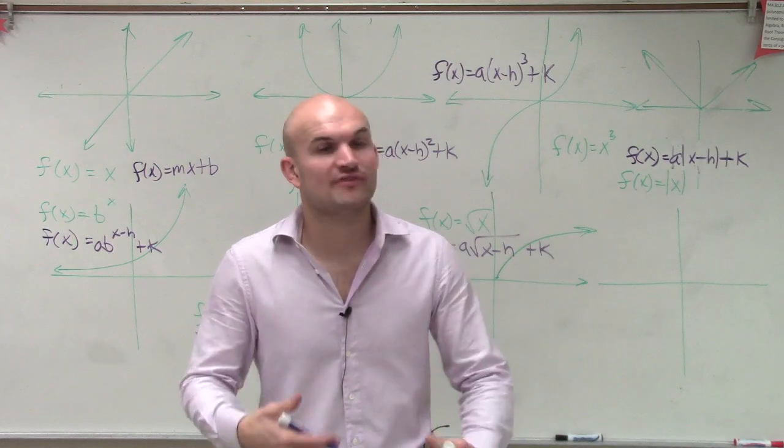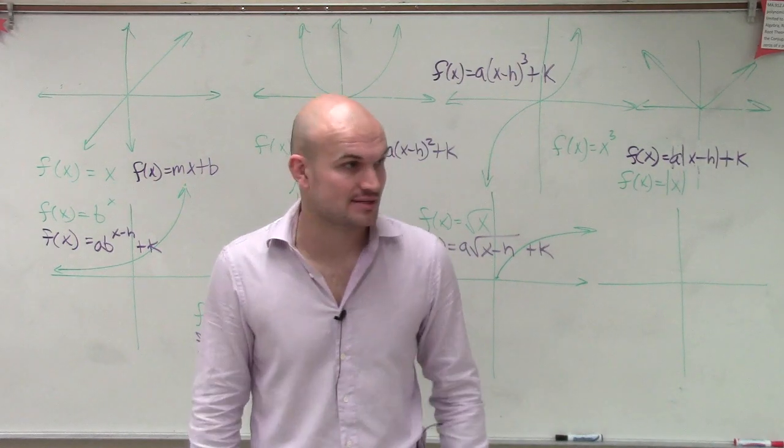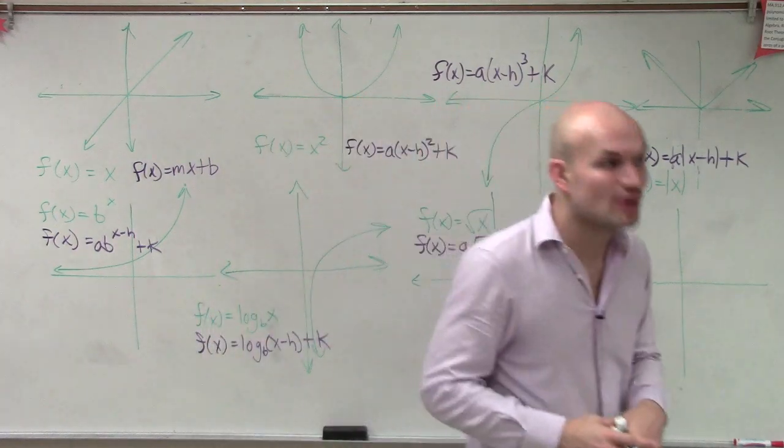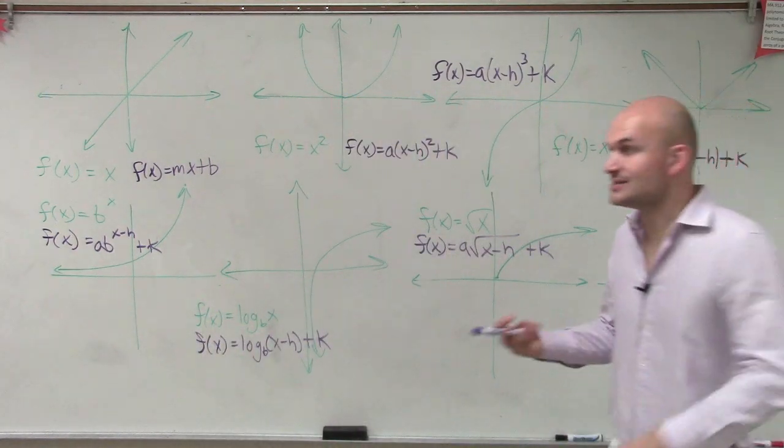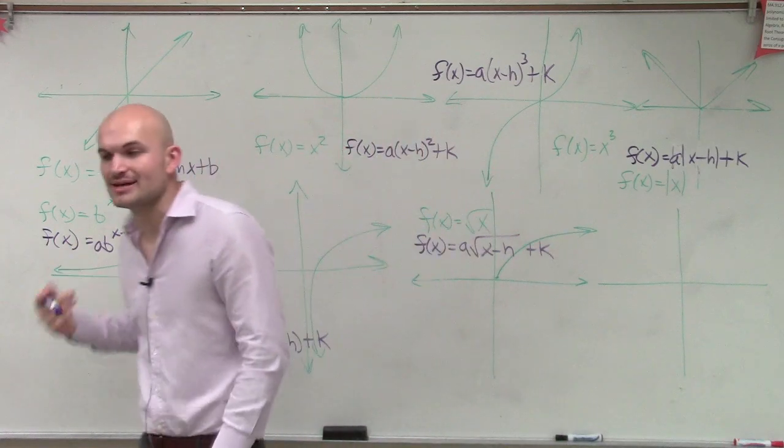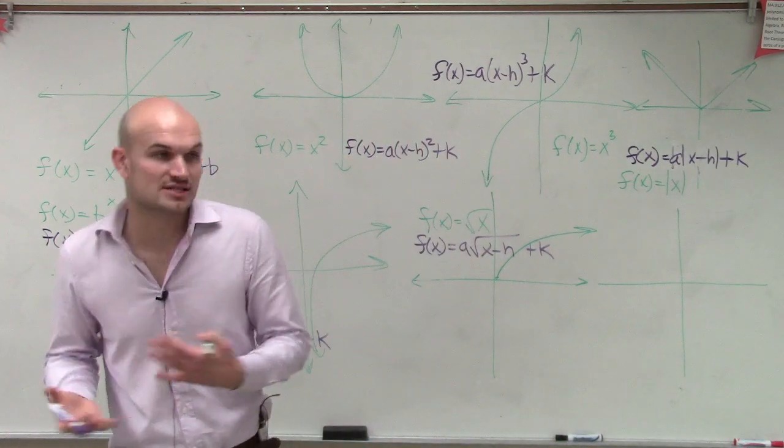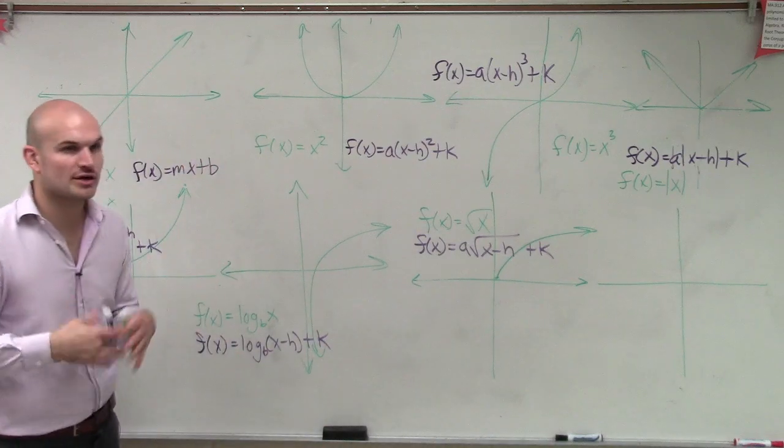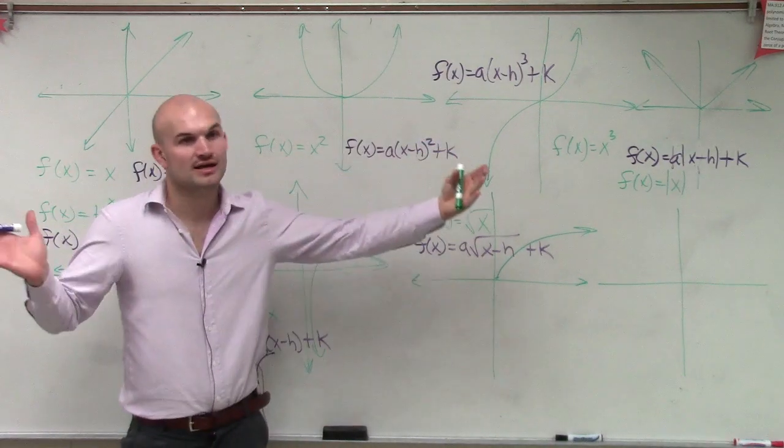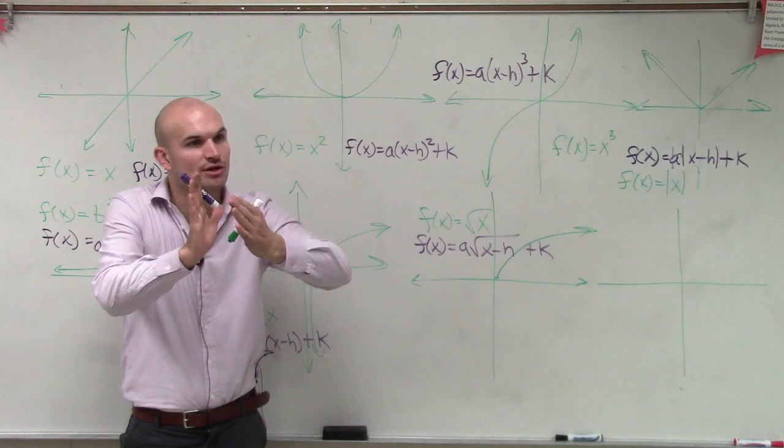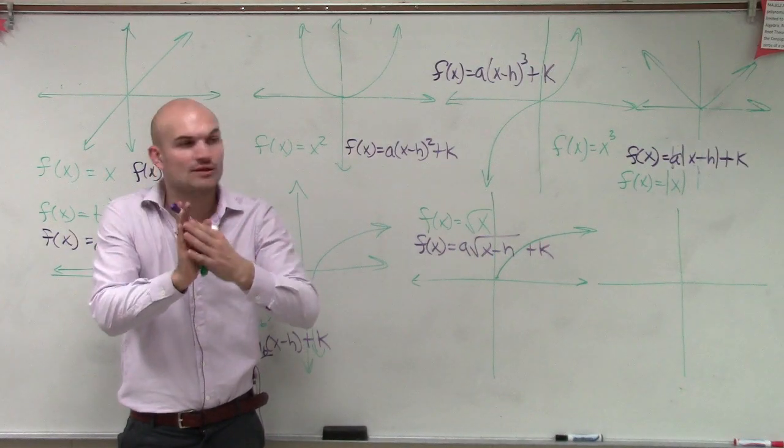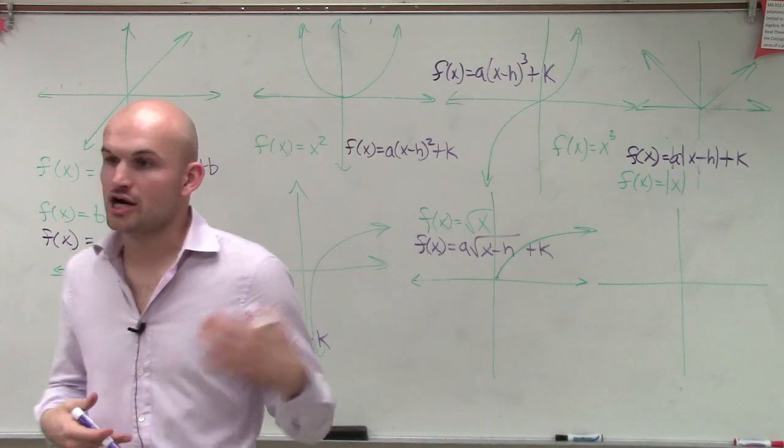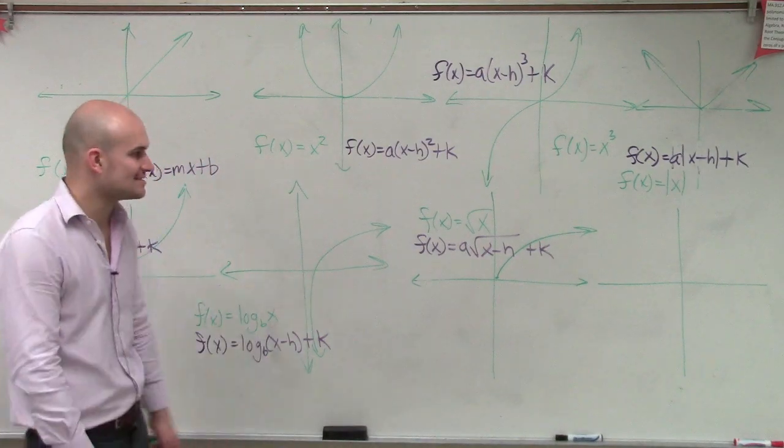A was going to tell us if we reflected over the x-axis or not. It also told us if we're going to have a stretch or a compression. So you guys need to remember, if you forgot that, you might want to write that back down again. A tells us if we're going to have a reflection over the x-axis or a stretch or a compression. Remember quadratics? If it was a whole number, it made it compressed. Or if it was less than 1, it made it wider. That a tells you the stretch and the compression. It also tells you if there's a reflection over the x-axis.